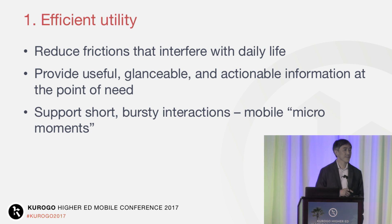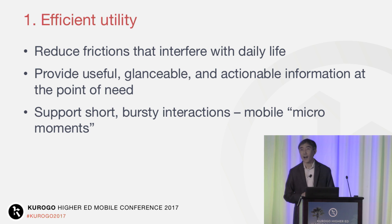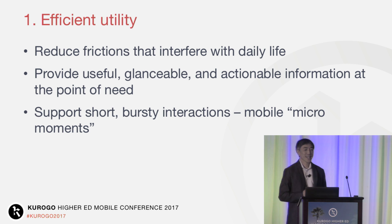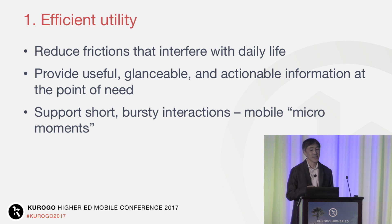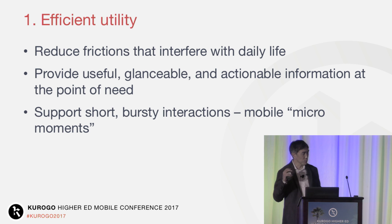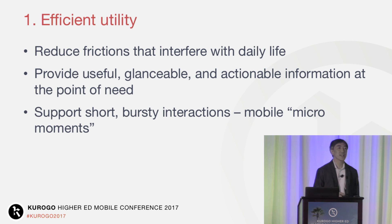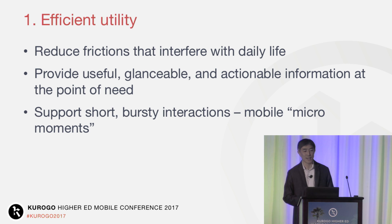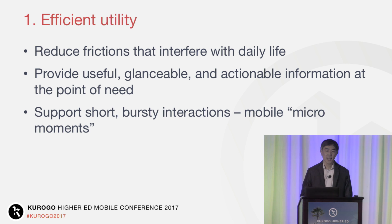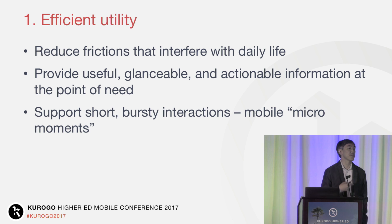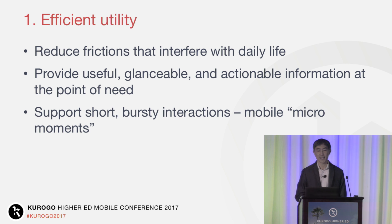Forrester and Google have been calling these 'mobile micro moments.' An academic study from Lancaster University found that smartphone users actually reach for their smartphones more than twice as often as they think or report that they do. Those interactions are so quick, bursty, and instantaneous, they're almost subconscious. Counter-intuitively, optimizing for efficient utility can actually sometimes drive down metrics like time per session while driving up others like sessions per user or percent of repeat sessions. But remember, we're focused on delivering efficient utility to facilitate the user's day-to-day life.